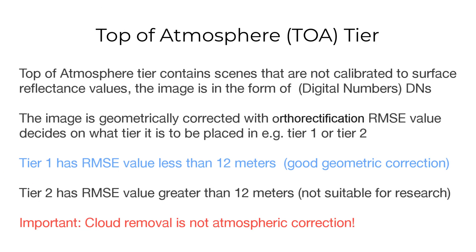The top of atmosphere tier contains scenes that are not calibrated to surface reflectance values. The image pixel values are in the form of digital numbers. The image is geometrically corrected and the orthorectification RMSE value decides what tier it is to be placed in, for example tier 1 or tier 2.